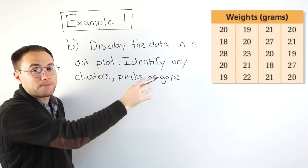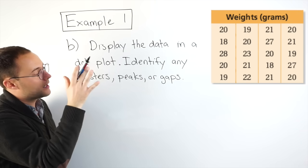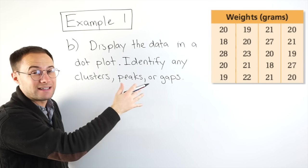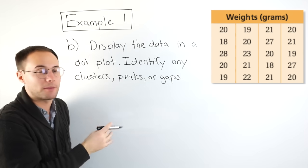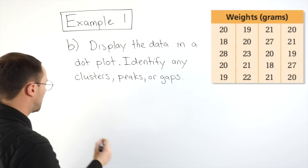So we're going to start with a number line. Well, if I look at my data, I can see that the least value is 18, 18 grams, and the greatest was 28 grams. So that's where I'm going to start on my dot plot.